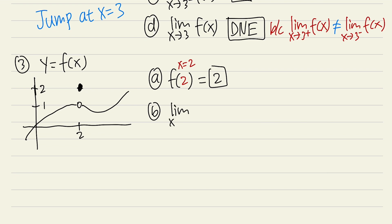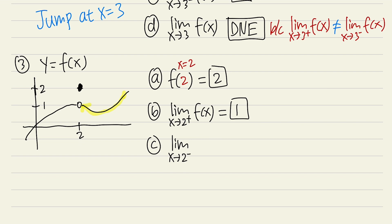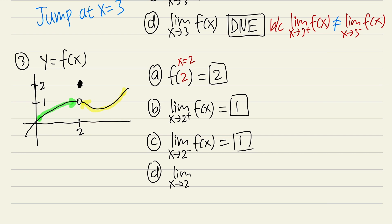For part b, the limit as x approaches 2 from the positive direction: coming toward 2 from the right, the y value is approaching 1, so the answer is 1 — that is the y value of the open circle. For part c, the limit as x approaches 2 from the negative direction: coming from the left, the y value is also approaching 1.